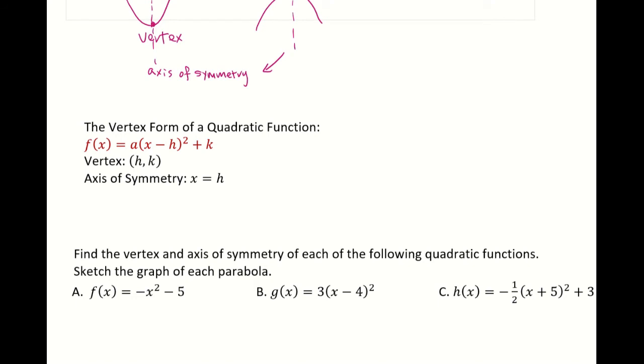If your quadratic function is in the form of f equals a times (x minus h) squared plus k, then the vertex of this quadratic function is (h, k) and the axis of symmetry is the equation x equals h.